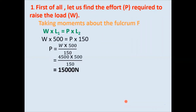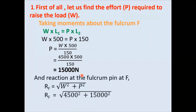Substituting values, we find the value of P. Then using the parallelogram law of forces: Rf = √(W² + P² + 2PW·cosθ). Here θ is 90°, so cos90° = 0, simplifying the equation. Substituting values of W and P, the reaction at the fulcrum Rf comes out to 15,660 Newton.